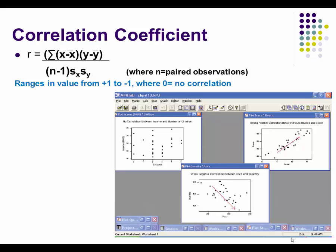Rather than relying on subjective analysis of the data, we can calculate the correlation coefficient using the formula on the screen — we did this in BIS 230. The correlation coefficient is denoted by small r, and can range from negative one, which is perfect negative correlation, to positive one, which is perfect positive correlation. The closer the value is to zero, the more likely there is no correlation, in which case we would not build a regression equation.